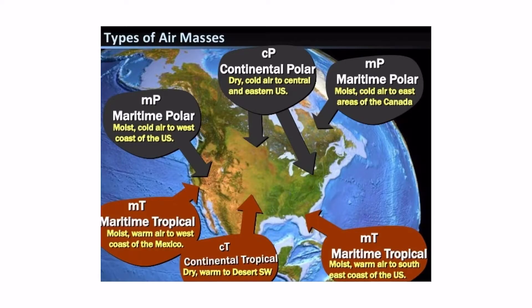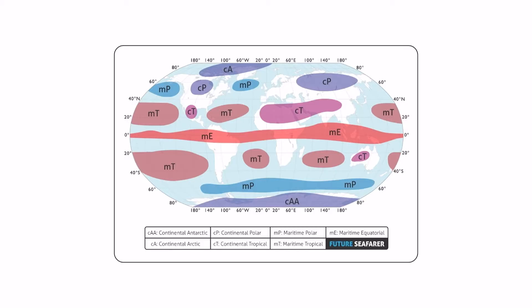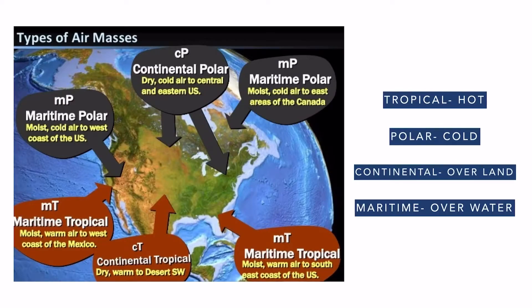These are the different types of air masses: polar continental, polar maritime, tropical continental, tropical maritime, and also the arctic and equatorial air masses. Just note that tropical means hot, polar means cold, continental means originated over land, and maritime means originated over water. If you know these four things, you'll be able to decode all these air masses.